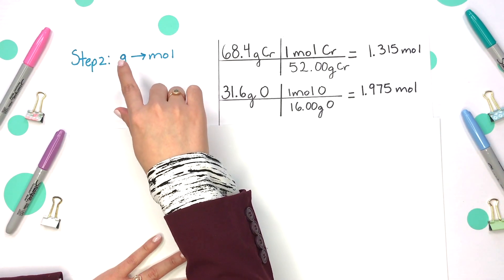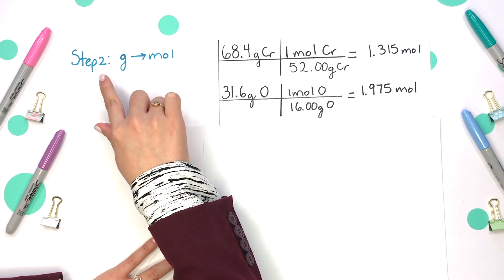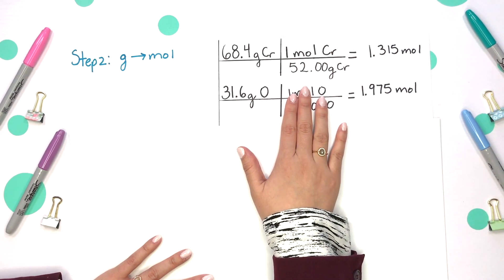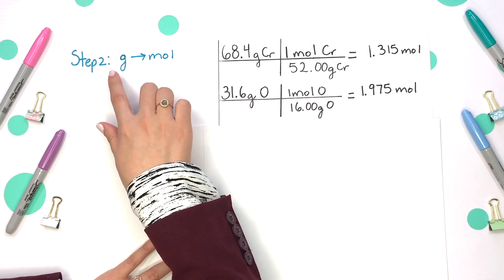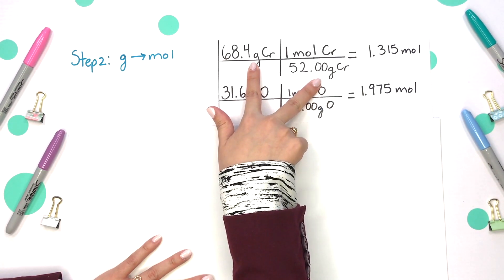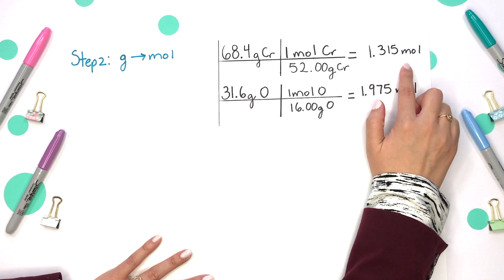Step two is to convert your grams to moles. We'll use the grams from our previous step changing that to moles using the molar mass as your conversion factor. Aligning those grams across from each other so they can cancel and then we'll divide and we'll get 1.315 moles of chromium.